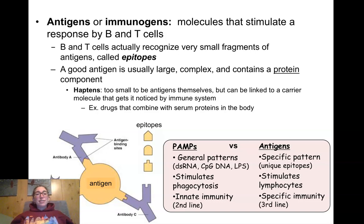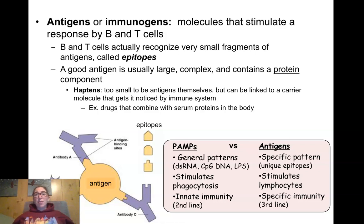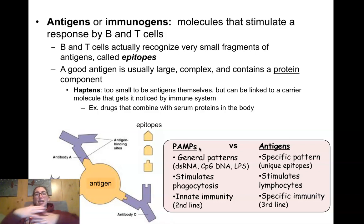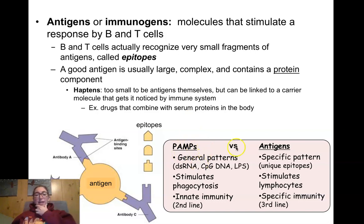B cells and T cells recognize very specific signatures on the surface of cells. In the previous chapter, we talked about phagocytes recognizing PAMPs — pathogen-associated molecular patterns. These are very generalized patterns, like double-stranded RNA. It doesn't matter what the sequence of the RNA is; it just matters that the structure is double-stranded. That's a molecular pattern our phagocytes can recognize as foreign. PAMPs are general patterns that stimulate phagocytes of the innate immune system.